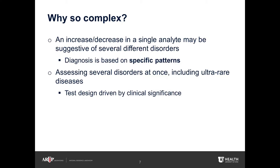So why so complex? Analyte patterns are characteristic of specific disorders. Analytes are affected by the patient's age, diet, and clinical status, including treatment. So test interpretation, which we always provide with the numbers, is not based on the increase or decrease in a single analyte, but on the specific patterns of multiple analytes. Also, measuring multiple analytes allows for assessing several disorders, including ultra-rare diseases, for which individual testing might not be practical.